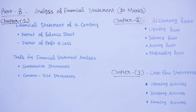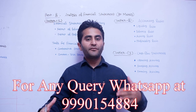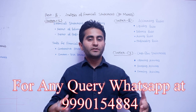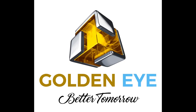A four-mark question may come in your exam from the accounting ratios chapter — it is an important chapter. Chapter 3 is cash flow statements, which is the most important chapter; 6 to 8 marks question may be expected. You will learn operating activity, investing activity, and financing activities. If you have any doubts, please let me know in the comment section. Thank you.